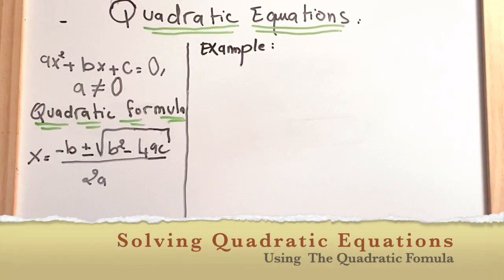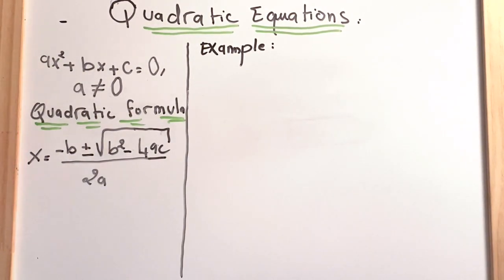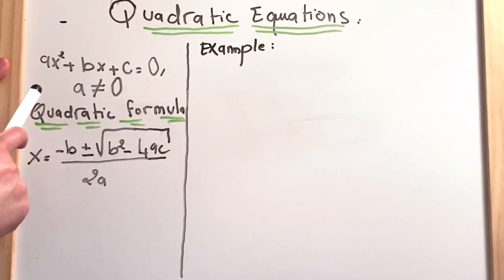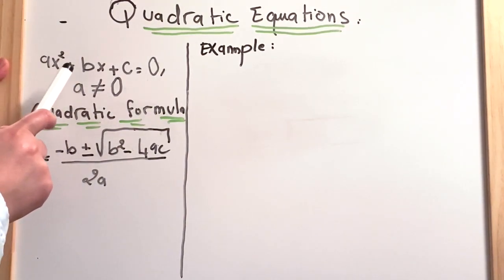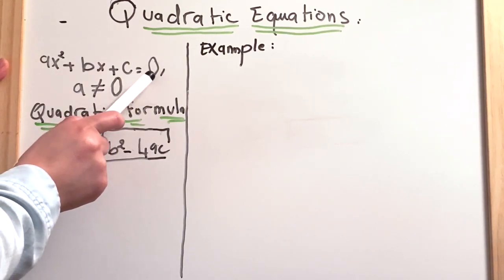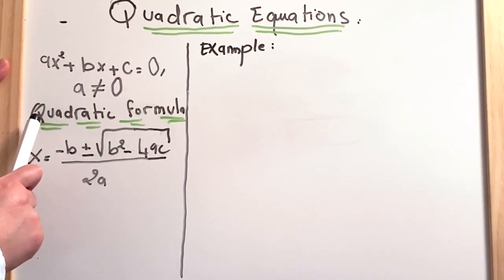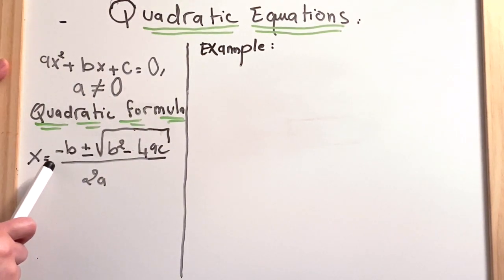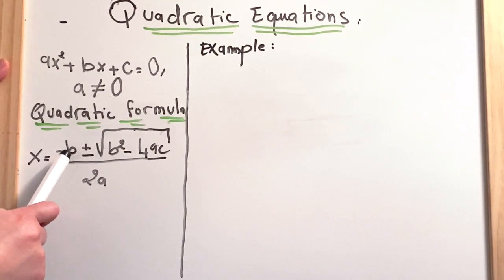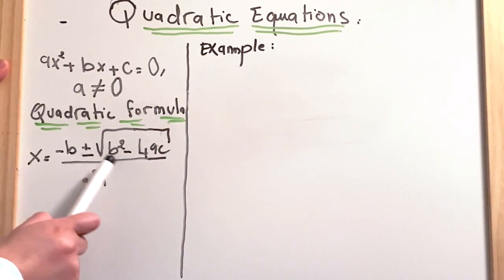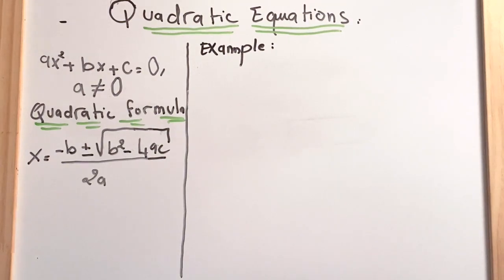Hi everyone, today I'm going to teach you how to use the quadratic formula to solve equations. With the quadratic formula you can solve any equation, however you have to make sure that the equation is set up as ax squared plus bx plus c equal to zero, where a shouldn't equal zero. The quadratic formula is x equal to minus b plus or minus square root of b squared minus 4ac divided by 2a.